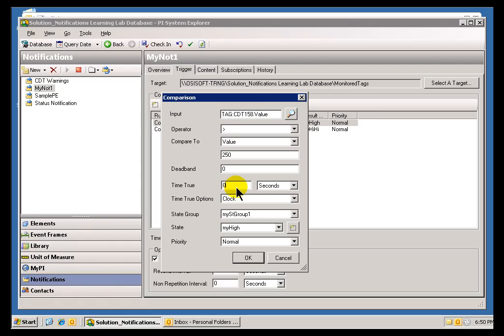And the Time True is a fairly straightforward concept. What we're saying is that the Notification has to be true for a certain amount of time. So you specify this as, say, 10 minutes and then that's something that has to exist. That condition that's defined by that set of criteria here, this condition has to exist for at least 10 minutes.